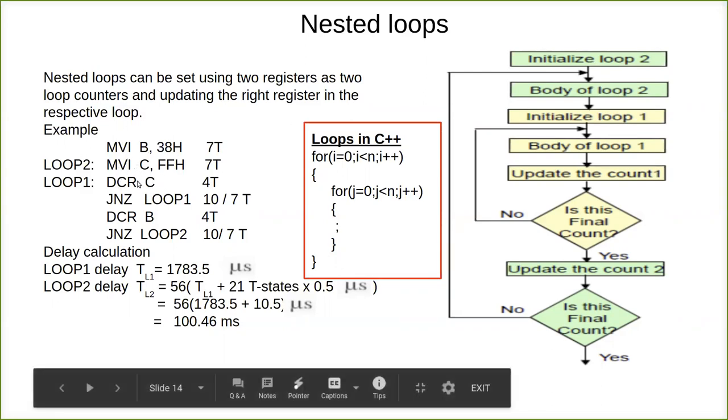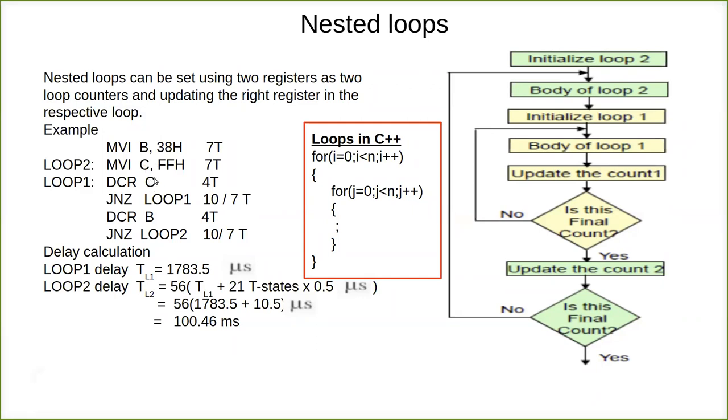Here what we do is decrement C, we decrement this register. When it becomes 0, it quits. But when it is not 0, here we have given loop 1. So this will keep decrementing, and when it becomes 0, it comes to this line. Now decrement B takes place.